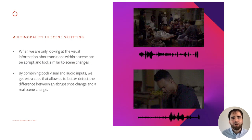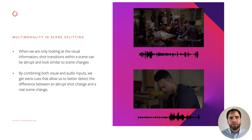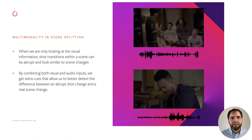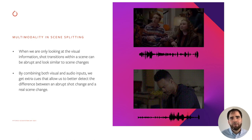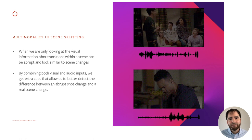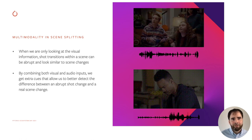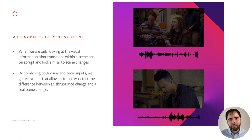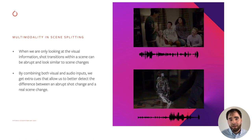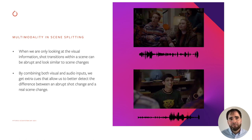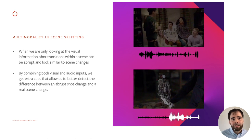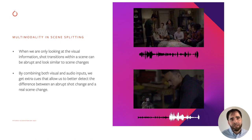Another problem that we solve with multimodality is content scene splitting. We define a scene as a collection of shots semantically connected by the characters that appear, the topic, and the location. In this first example, we can see very different shots that an only video-based model could understand as different scenes, but the continuity in the audio signal helps us identify it as the same scene. In the second example, the audio signal helps us in the opposite — to identify that the boundary between shots is in fact a change of scene.